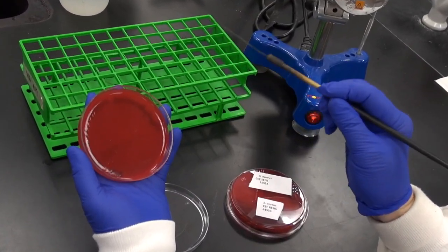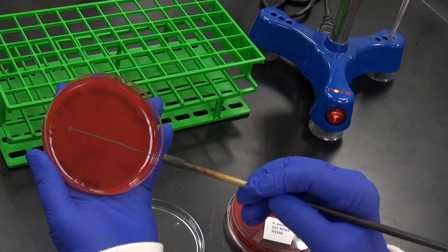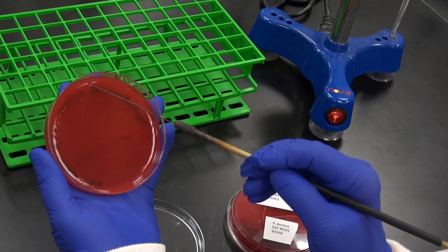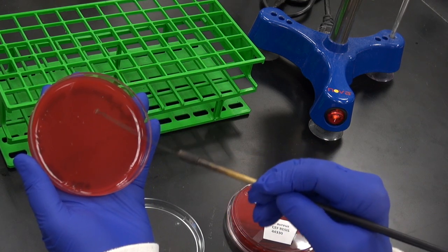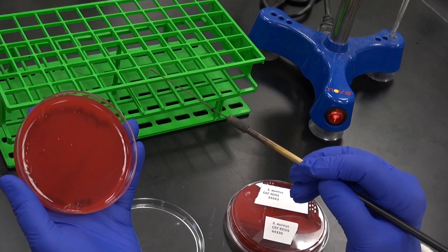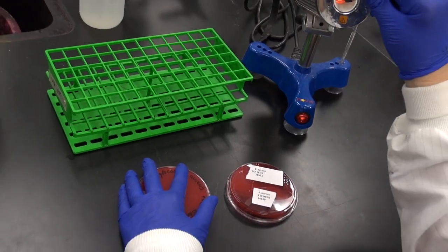Again, streak into the previous quadrant a couple of times, then continue with parallel back and forth motions to spread the bacteria over a third quadrant. Close the plate, heat and cool the loop as before.